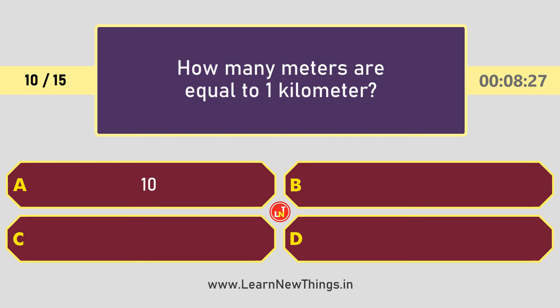How many meters are equal to 1 kilometer? The answer is 1000.